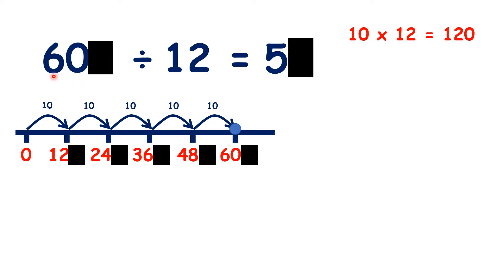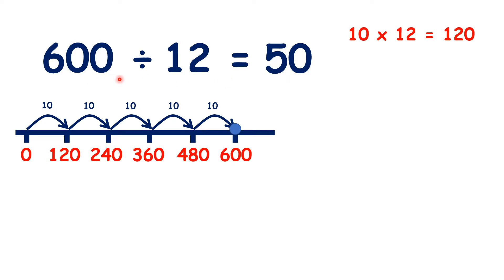And if we know that 60 divided by 12 is 5, we know that 60 tens, so 600 divided by 12 is 5 tens. So 600 divided by 12 is 50.